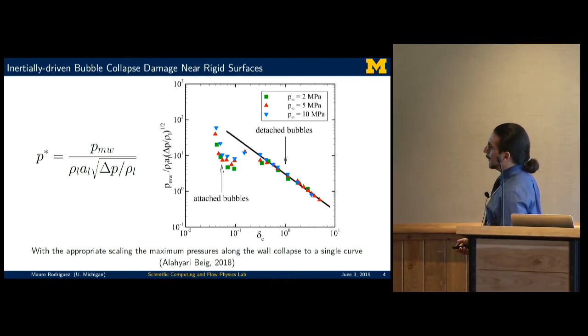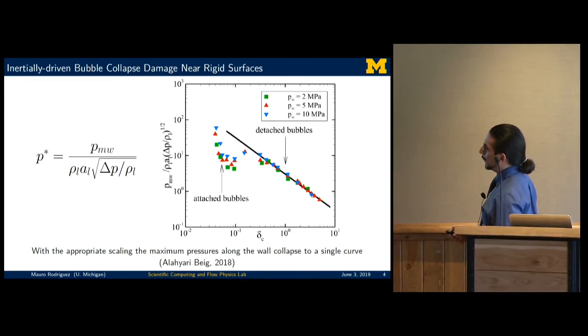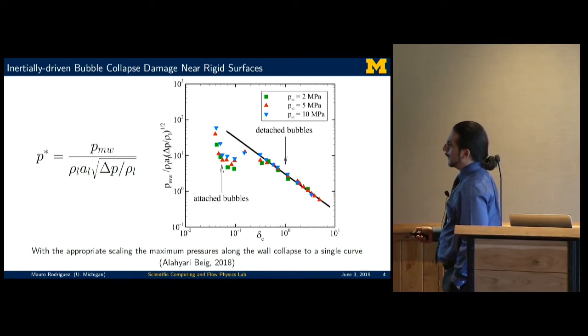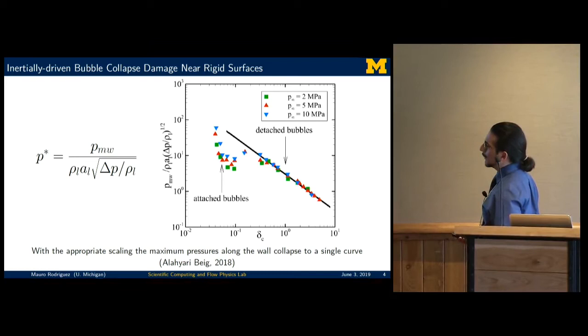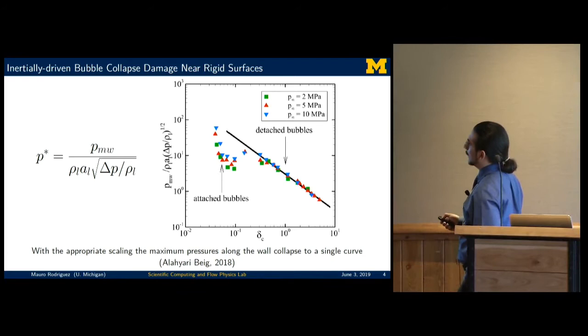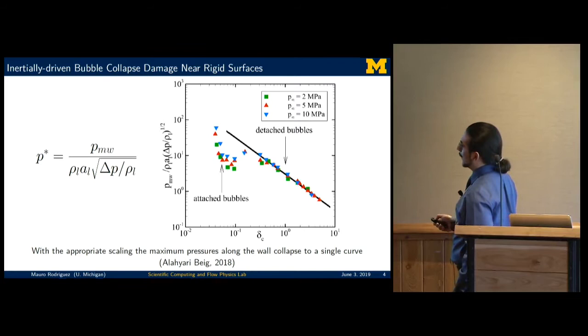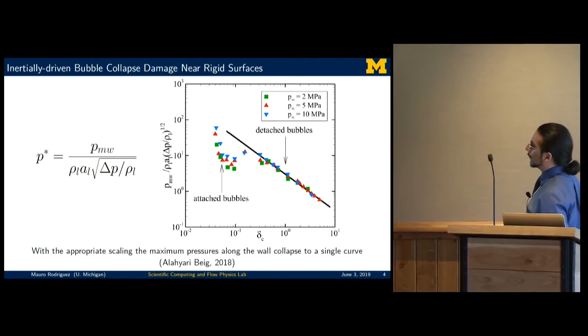The question then becomes, can we predict what this impact load was as a result of the initial conditions of the problem? One of the works that my colleague had done during his PhD is to see the appropriate scaling of the maximum pressures. For example, the maximum pressure P_max of the wall divided by the liquid density, the speed of sound of the liquid, and this specific speed known as a characteristic jet speed or the re-entrant jet speed. Because of this, you can actually do the appropriate scaling. You can see that for all the cases for which the bubble collapsed at different distances, you can get all the data to collapse onto a single curve. This allows us to predict what the impact loads would be from a single bubble near a wall.